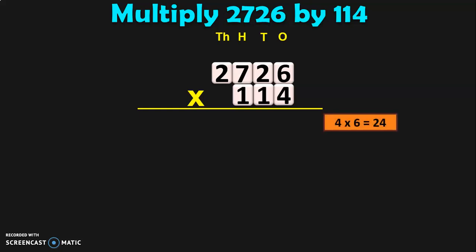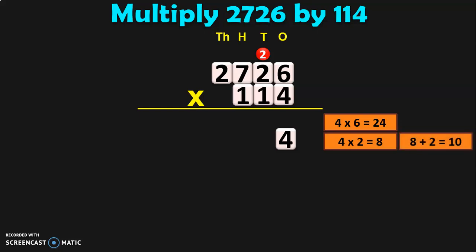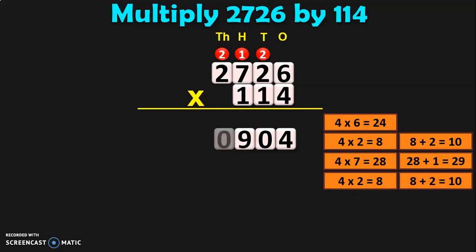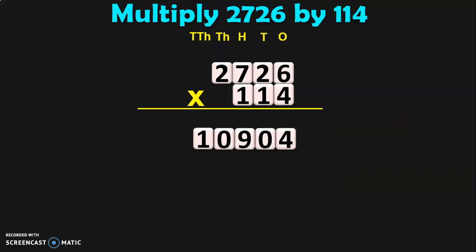First, 4 into 6 is equal to 24. So, 4 carry over 2. Next, 4 into 2 is 8. 8 plus 2 is 10. 0 carry over 1. Next, 4 into 7 is equal to 28. 28 plus 1 is 29. So, 9 carry over 2 to the 1000s place. Now, 4 into 2 is equal to 8. 8 plus 2 is 10. So, 0 will be in the 1000s place and the 1 will be going into the new place value, 10,000. The first step gave you 10,904 when multiplying 2726 by 4.